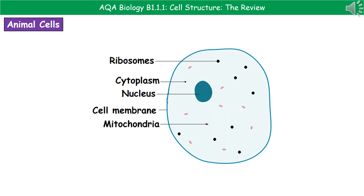We're going to take a look at the diagrams of each of the three key types of cells you need to know about. The first one, animal cells, are a type of eukaryotic cell. There are five main parts you need to know about. You've got the nucleus, which contains the genetic material, the cell membrane around the outside, and the cytoplasm. There are two others to remember as well: the pink oval-shaped blobs are the mitochondria, and the black circles are the ribosomes. Make sure you can label and draw an animal cell with those five key parts.